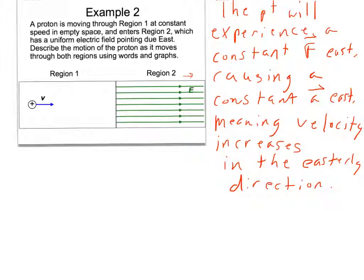The problem says also to describe its motion using graphs. Well, let's do a couple. The easiest to do might be an acceleration versus time graph. It has a constant acceleration, which we could say is at whatever the electric force is, divided by the mass of the proton. Now we don't have to know that number, but if we just label it on the chart, it would let the AP grader know, oh, they really do know that that would be the acceleration. And then to graph our acceleration, it's just right there.